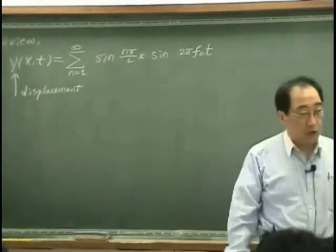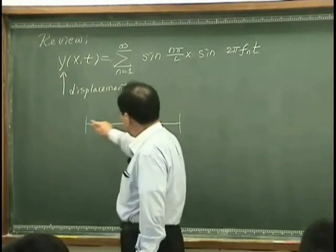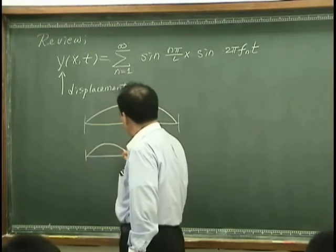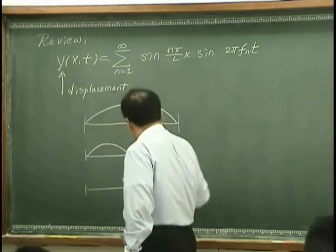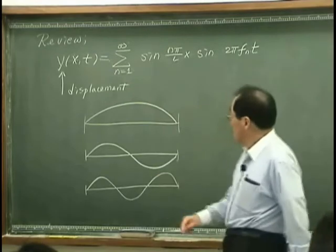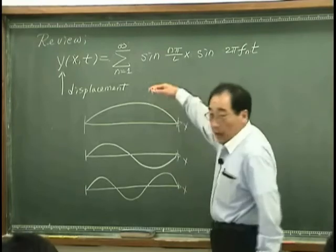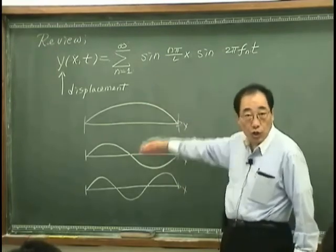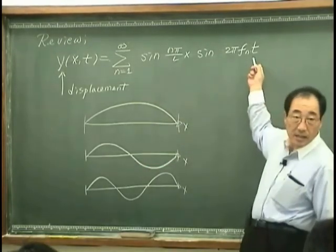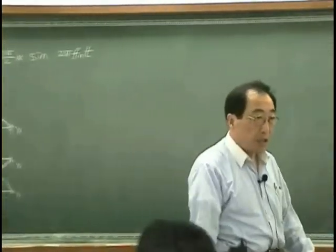The simplest case of this is the first mode looks like this, and the second mode looks like that, and the third mode looks like this. This is x, and the change of this mode with respect to time is represented by this.